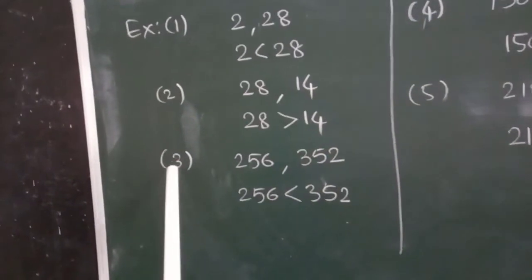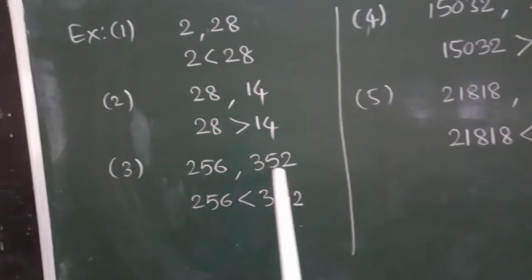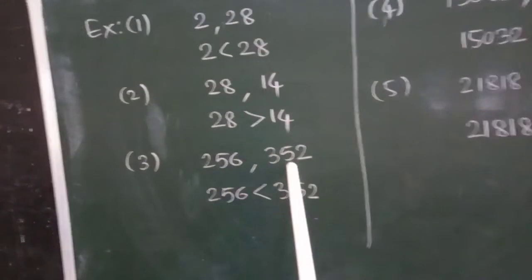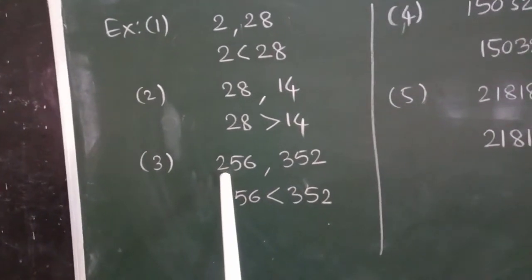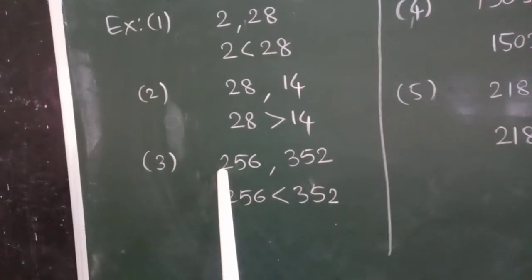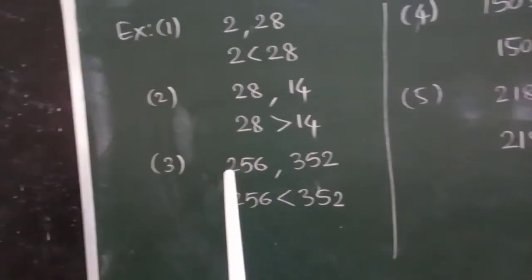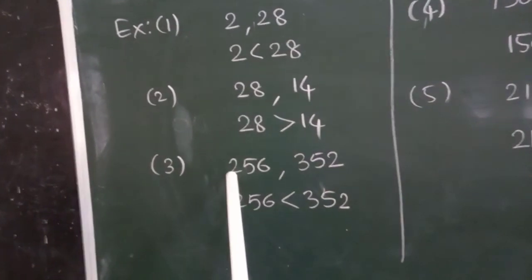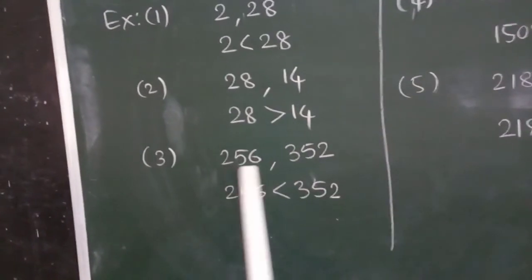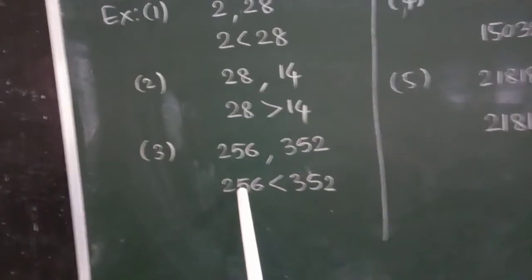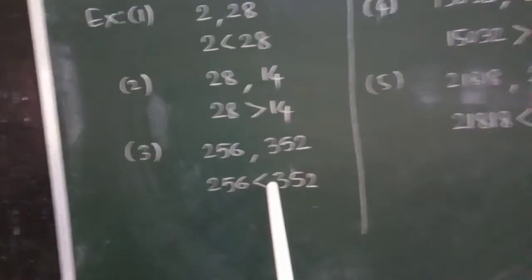Example 3. 256 and 352. Both are 3-digit numbers. So, the biggest place value is here 100. And here also 100. In the 100th place, 2 is here. In the 100th place, 3 is here. So, 2 is smaller. So, 256 is less than 352.